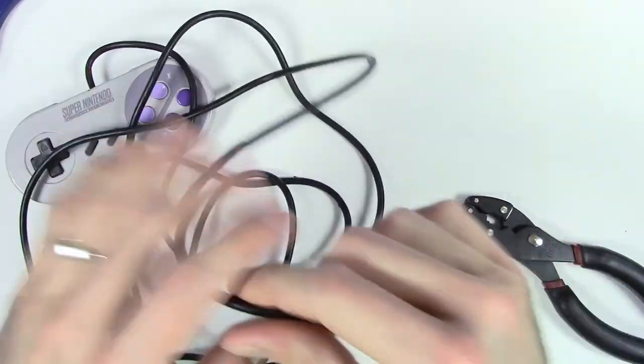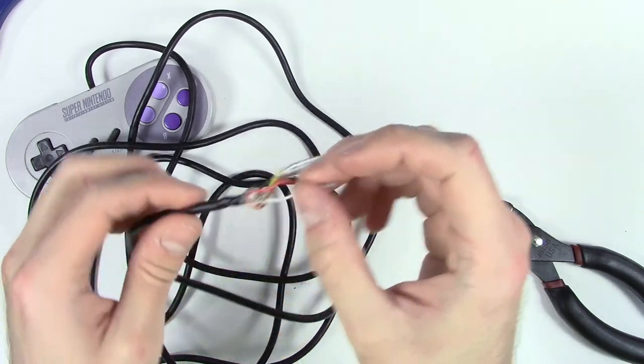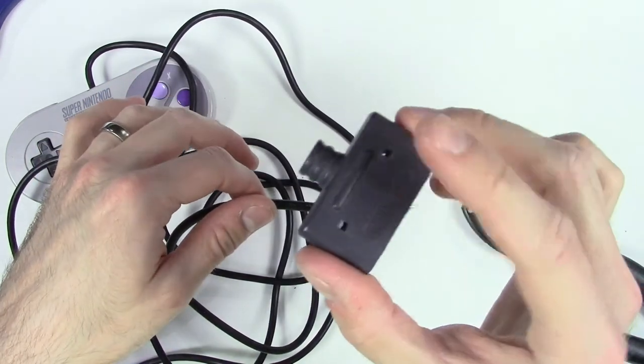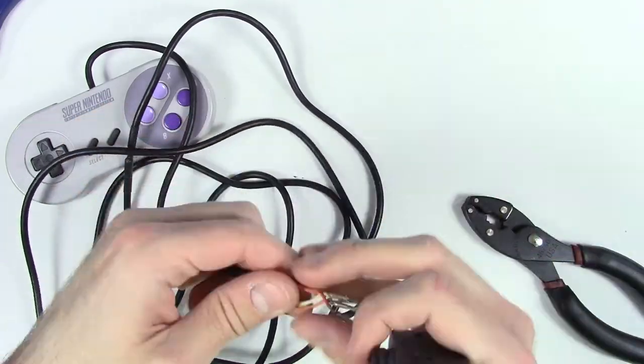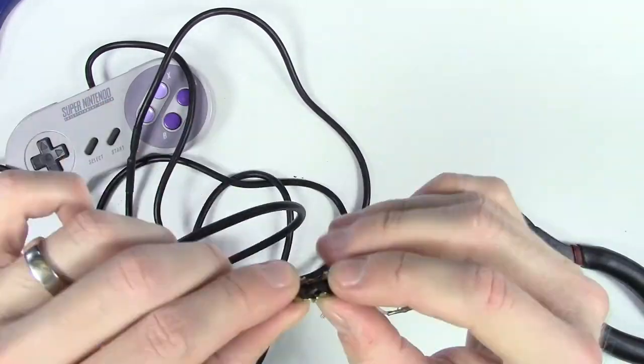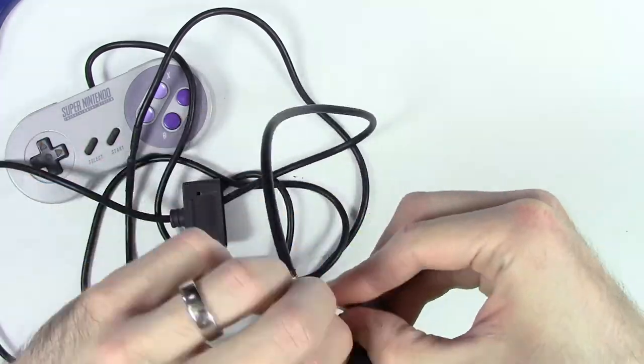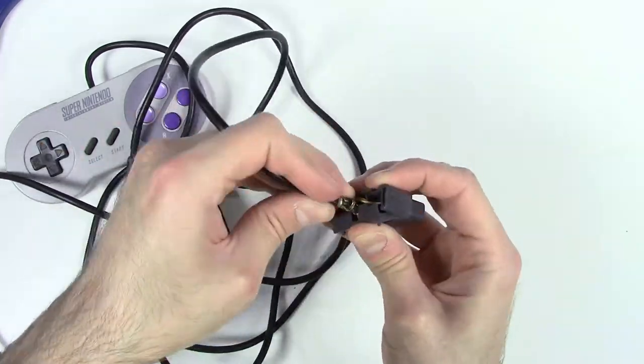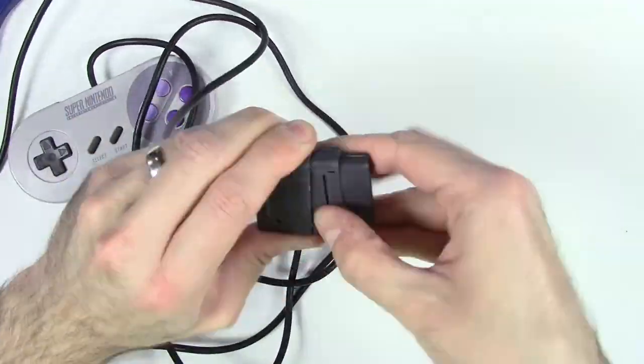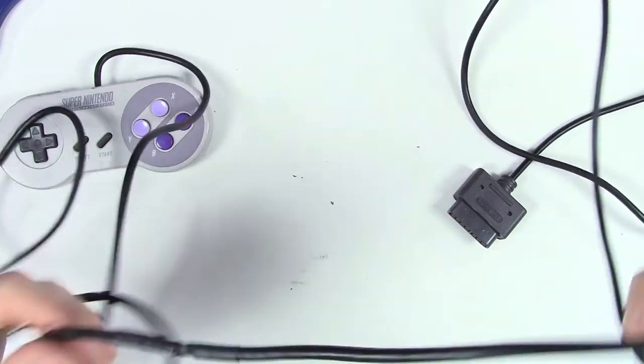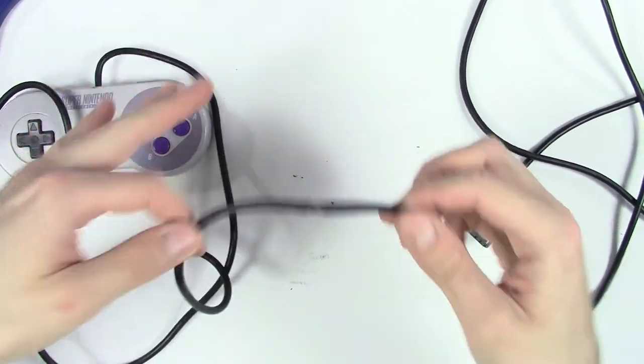So now that we've got that piece fixed let's get this whole thing reassembled. First things first, don't forget put this back on. So that's it. That is how you go ahead and repair a damaged Super Nintendo cable.